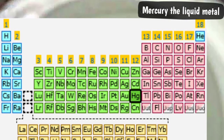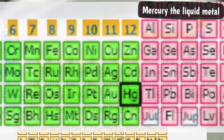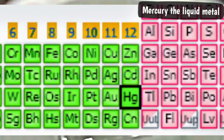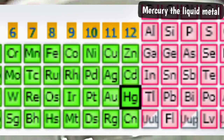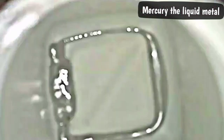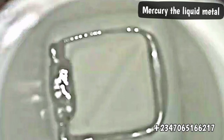Mercury belongs to the D-block elements in the periodic table, found alongside zinc and cadmium in group 2B, that is group 12 in the IUPAC recommendation. It belongs to period 6 because it has six electron shells.